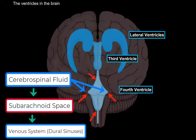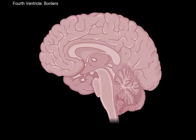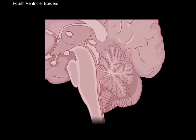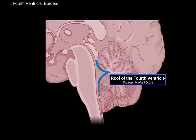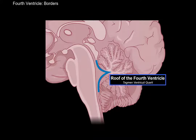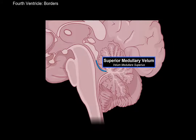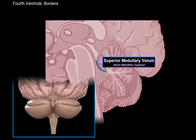Let's go back and zoom in on the fourth ventricle. The fourth ventricle consists of a roof, called the roof of the fourth ventricle or tegmen ventriculi quarti, and a base called the rhomboid fossa. The upper part of the roof is formed by a plate of white matter found between the superior cerebellar peduncles, called the superior medullary velum.